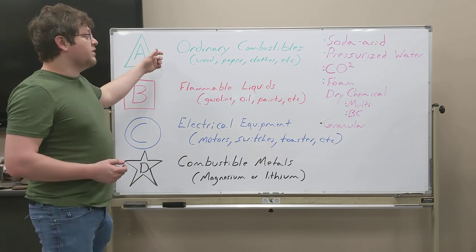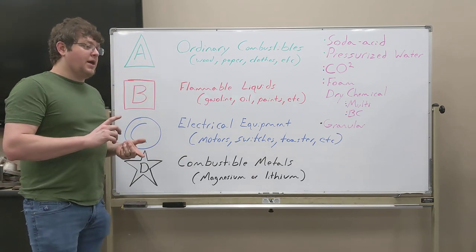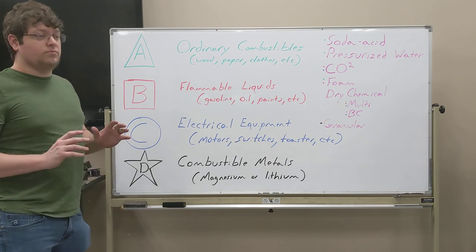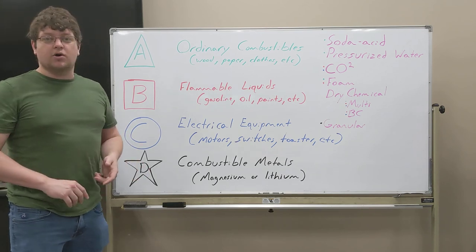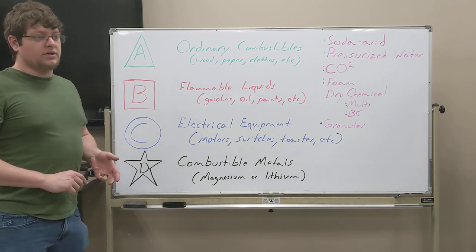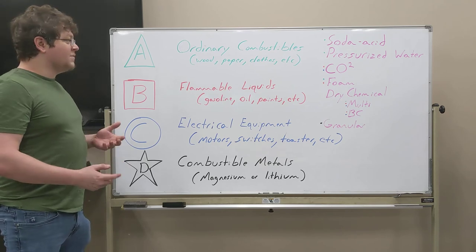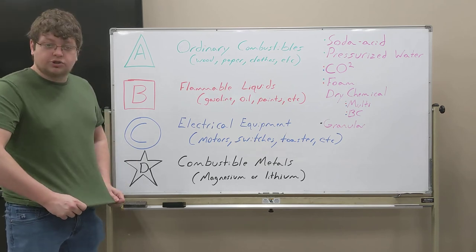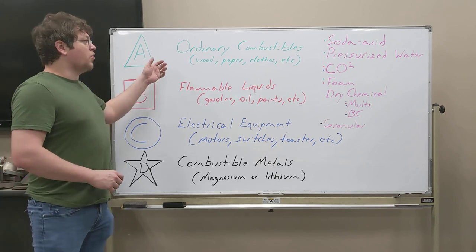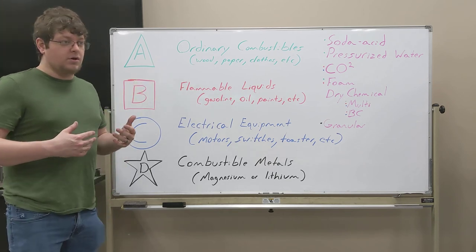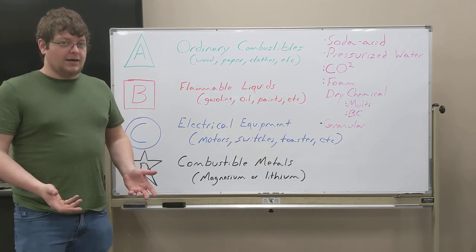The first thing we're going to really look at is fire extinguishers and the different types and what they are. The very first one is type A. Type A is your ordinary combustibles. If you think paper, sawdust, clothes, like your shirt catches on fire or something like that. This is your ordinary one that you can use for just basic items.